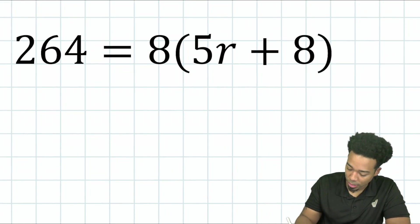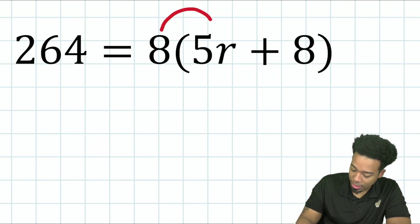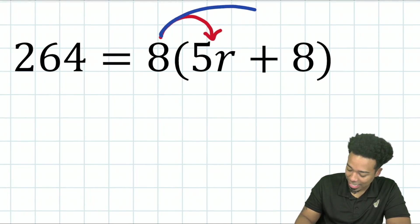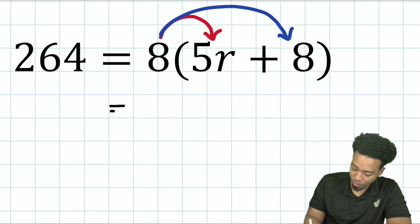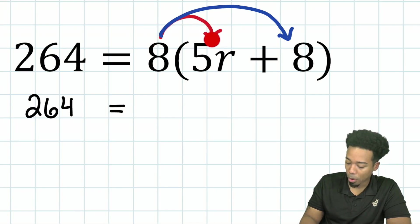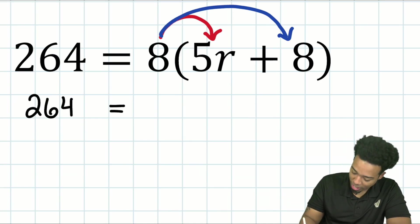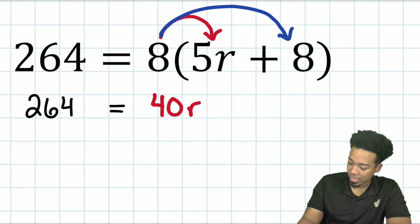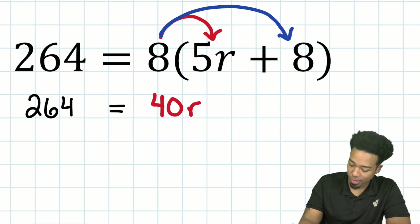The first thing I'll do is I'll distribute - keyword there. We're going to distribute the eight that's outside of the parentheses to everything that's inside. So I'm going to do two colors here so you can see both of those distributions. And so what we'll have, I'll rewrite everything we have so far, 264 on the left. We have eight multiplied by five R. Eight multiplied by five, that's going to be 40. And then you'll just tag that R right there at the end. So we have 40R. Next up, we will have eight multiplied by the eight over here. They're both positive, so we're going to keep it as a plus. Eight times eight, that's going to be 64.